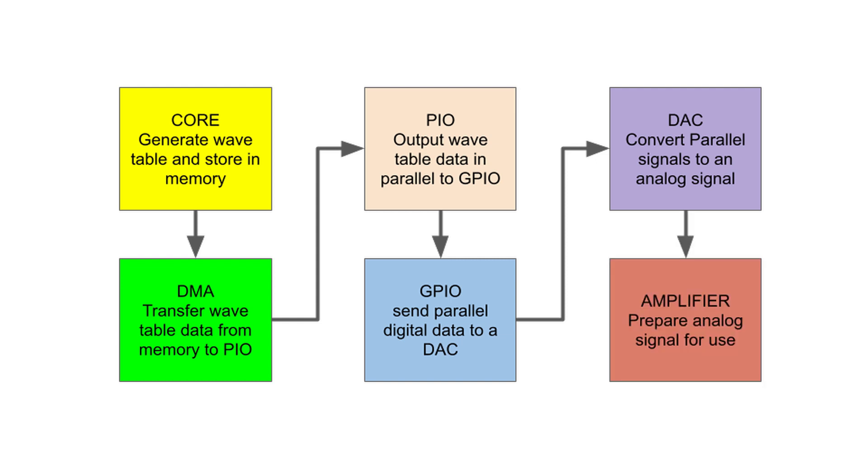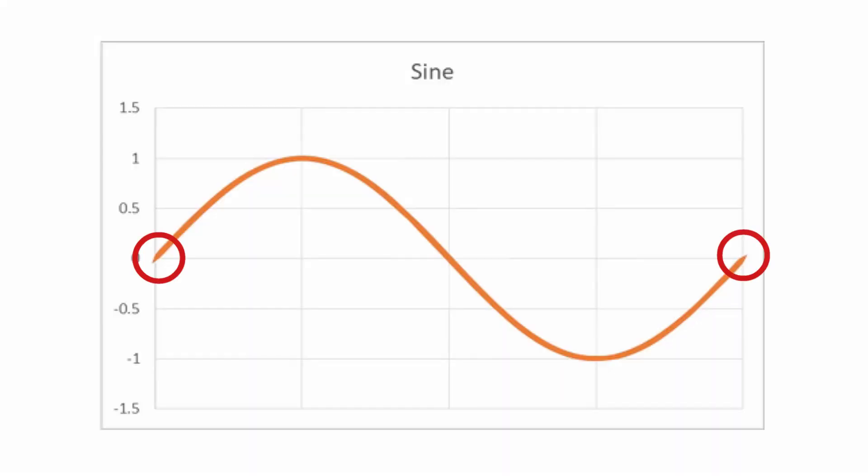In order for the wave to be continuous, the beginning and ending bytes of the wavetable must match. When I initially set up the AWG, I made the following decisions.